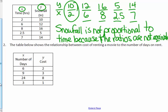Number two, the table below shows the relationship between cost of renting a movie to the number of days you rent it. So the cost is the Y and the number of days is the X. Is the ratio Y over X always the same? So 2 to 6, is that the same ratio as 3 to 9? Is that the same ratio as 8 to 24? Is that the same ratio as 1 to 3? 2 to 6, that's a 1 to 3 ratio in lowest terms. 3 to 9, that is 1 to 3 ratio. 8 to 24, that's a 1 to 3 ratio. They are all in the same ratio.